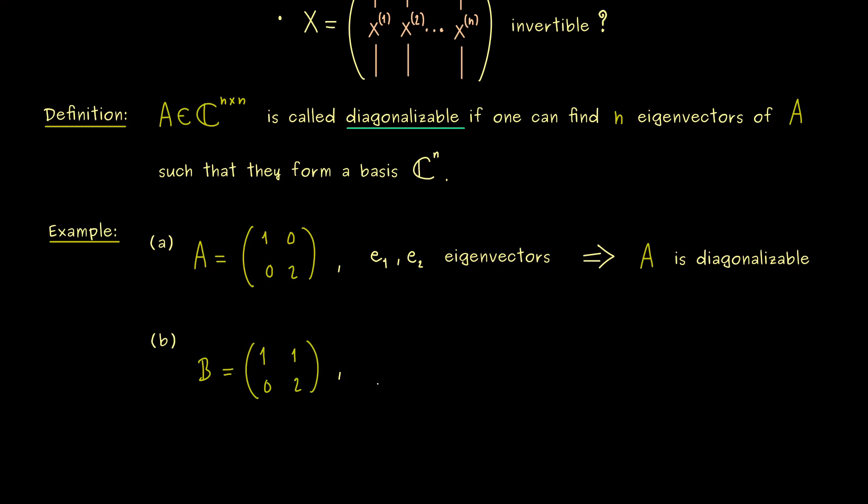As before, we immediately see that the vector 1, 0 is an eigenvector again. But obviously, E2 is now not an eigenvector.